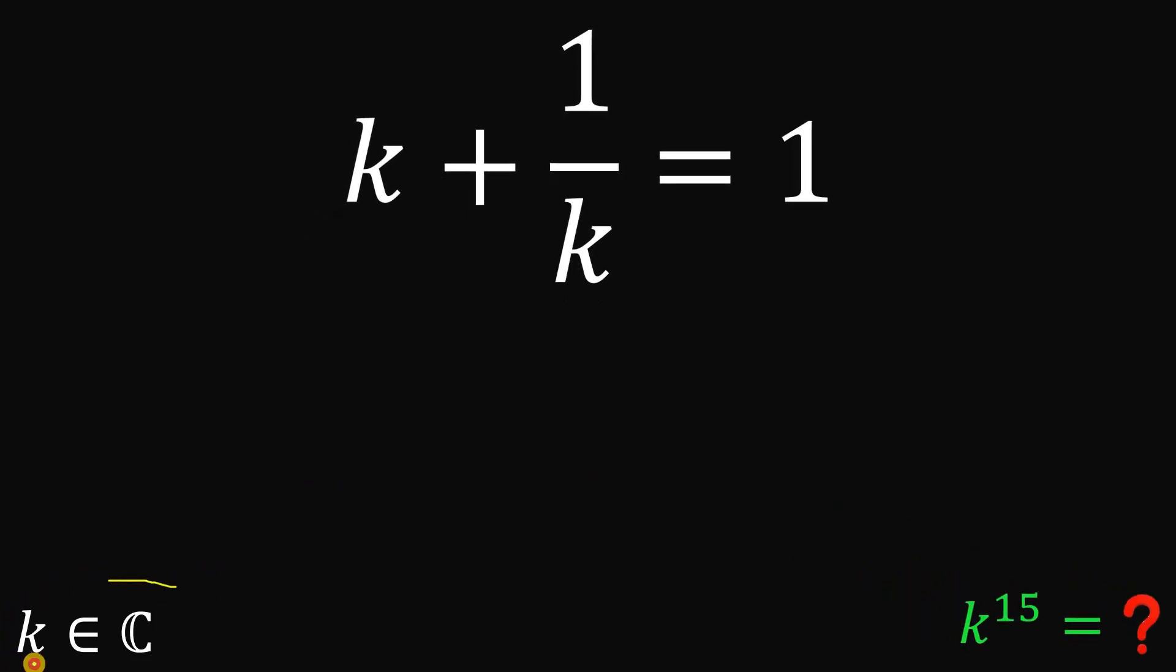We know for sure that k here is a complex number, not a real number. And also, observing this equation k plus 1 over k equals 1, this k is in the denominator. It values also that k is not equal to 0. Otherwise, this is undefined.